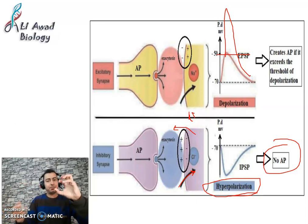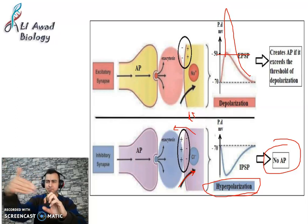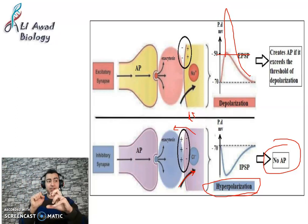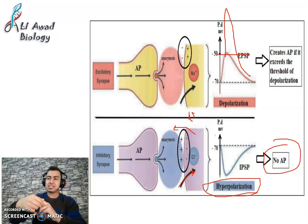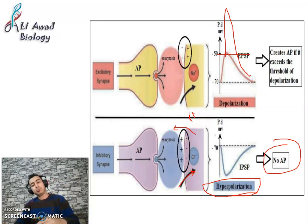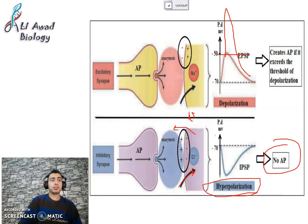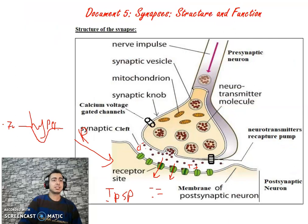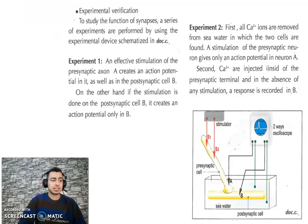For example in the heart, excitatory nervous messages (EPSP) can cause rapid beating, then another inhibitory synapse becomes active sending IPSP to slow it down. In the next video, we are going to talk about the integration of nervous messages in document 5, and also about the experimental verification of synaptic transmission — how synapses work as shown by experiments.